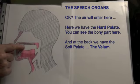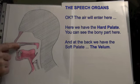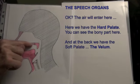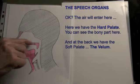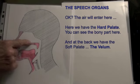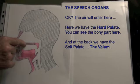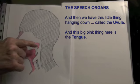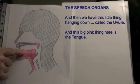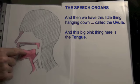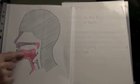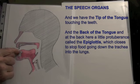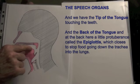The air will enter here. Here we have the hard palate — you can see the bony part here. And at the back we have the soft palate, the velum, and then we have this little thing hanging down called the uvula. And this big pink thing here is the tongue.